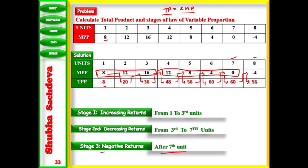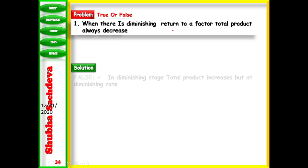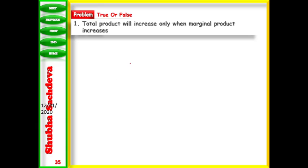Now we'll study some true/false questions. First: when there is diminishing returns to a factor, total product always decreases. This is false — when there is diminishing returns to a factor, TP increases at a diminishing rate, it does not decrease.